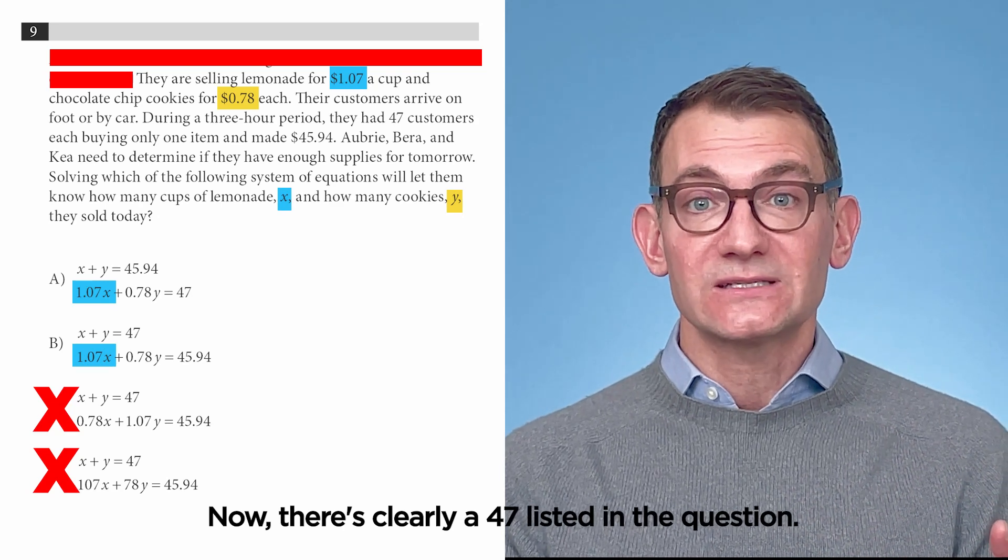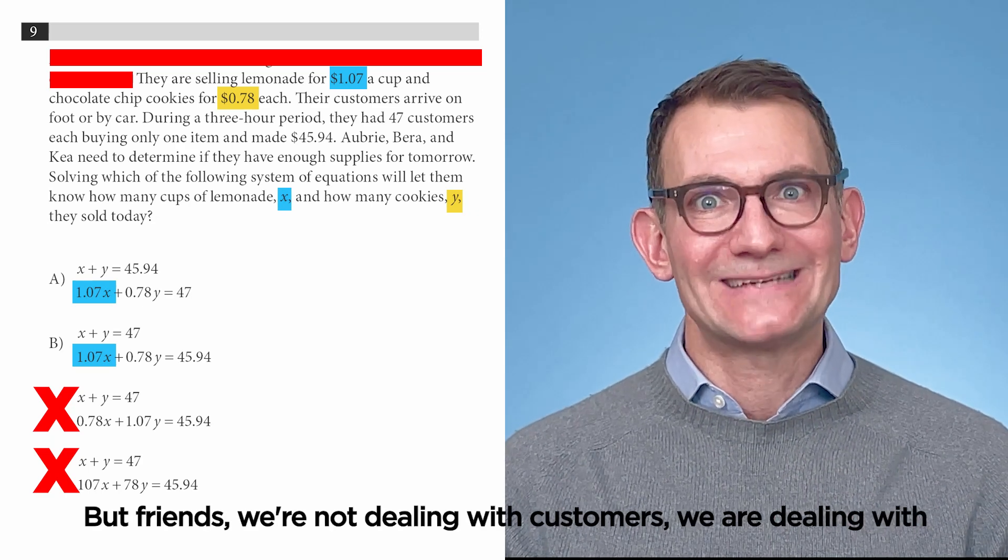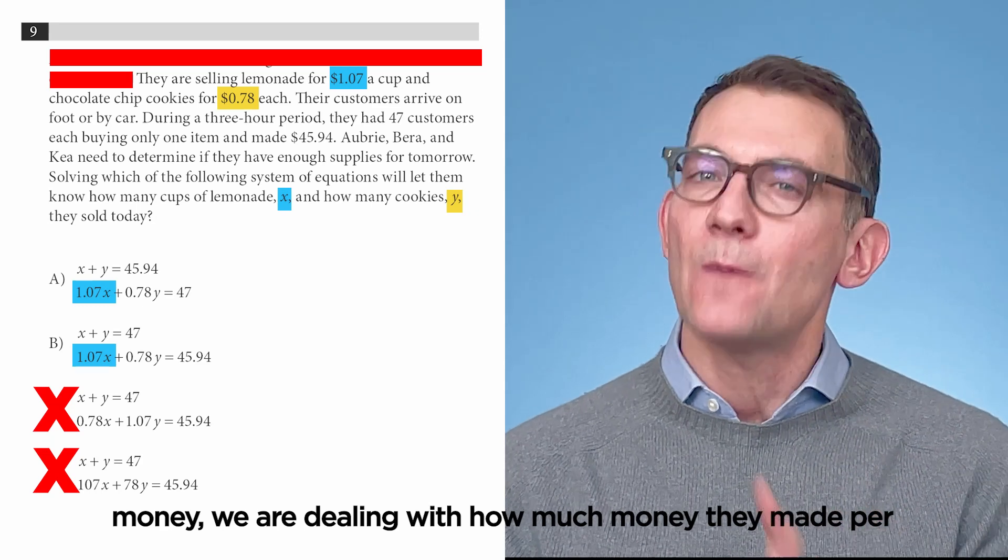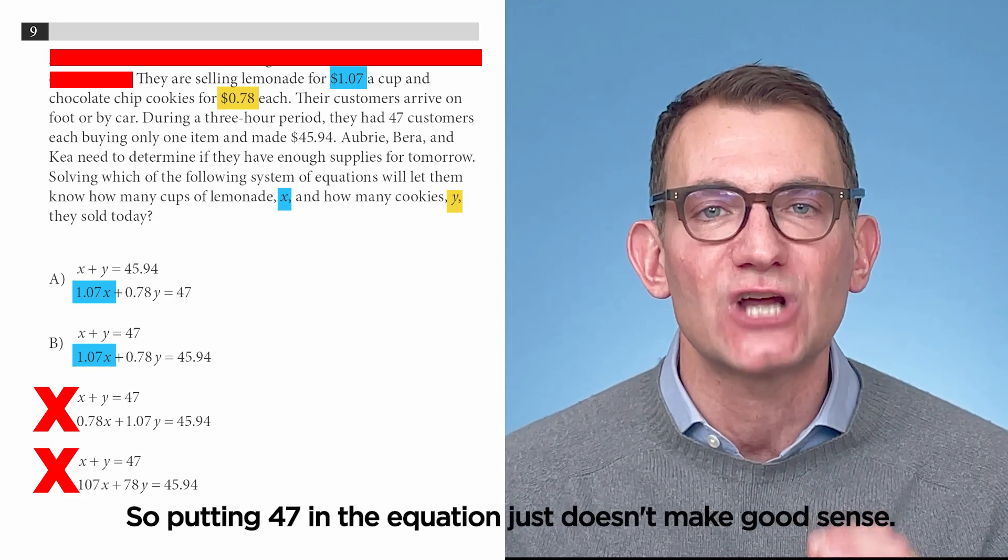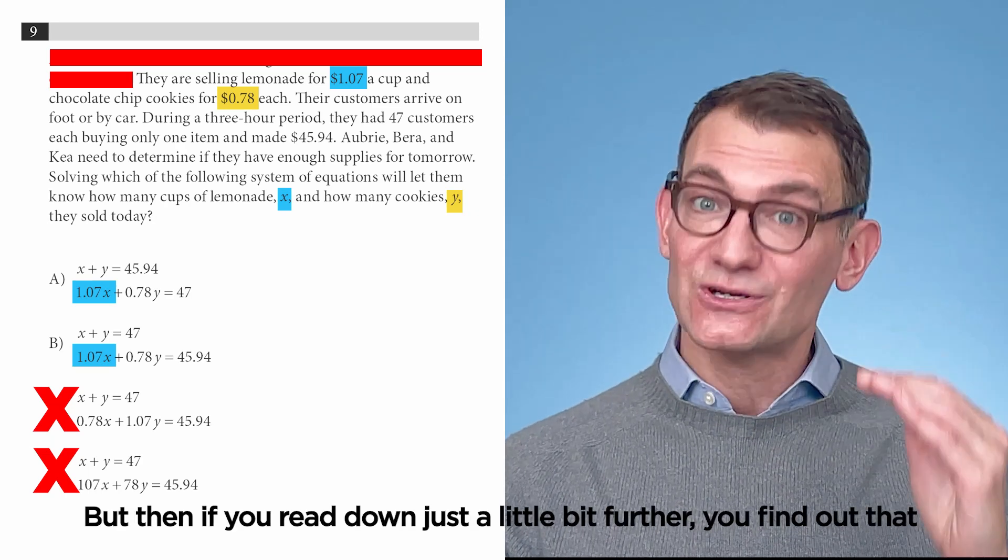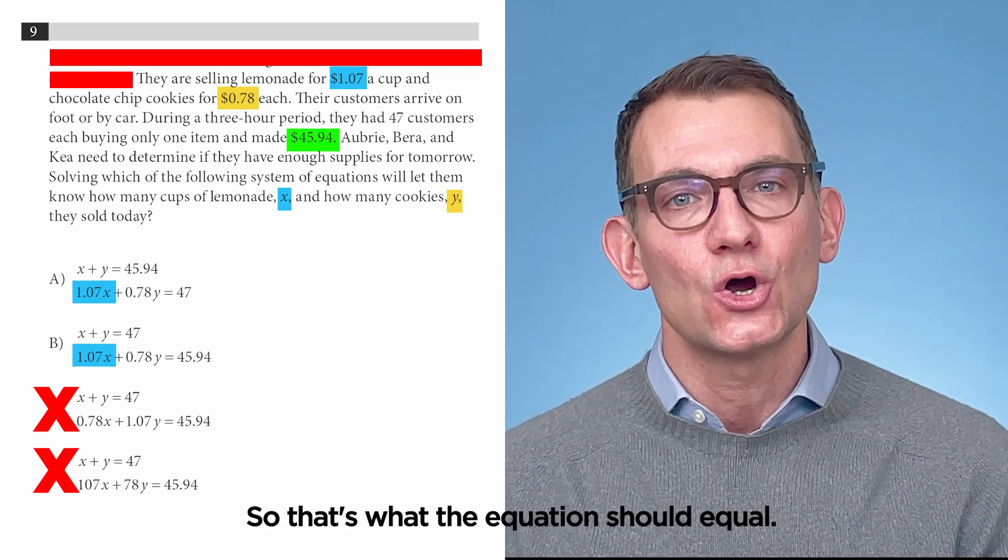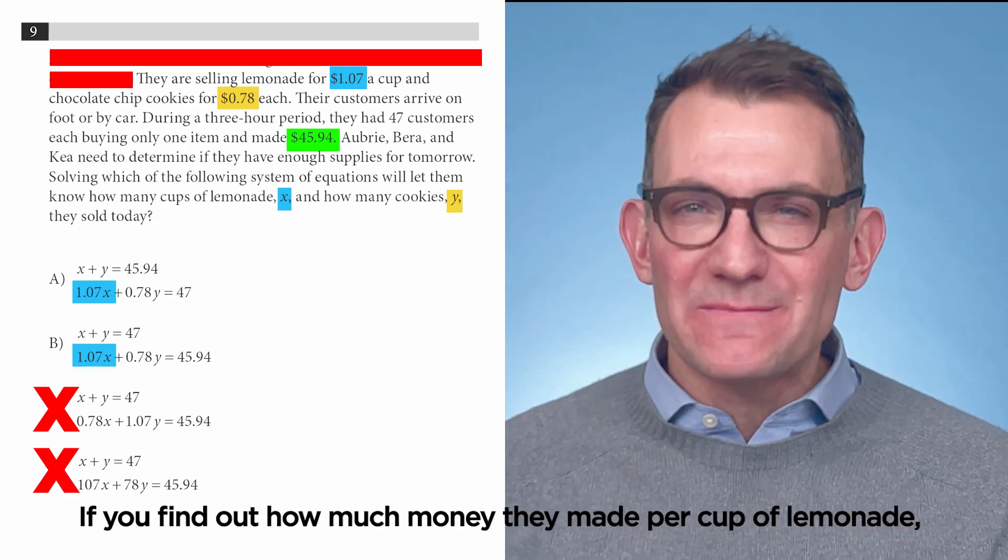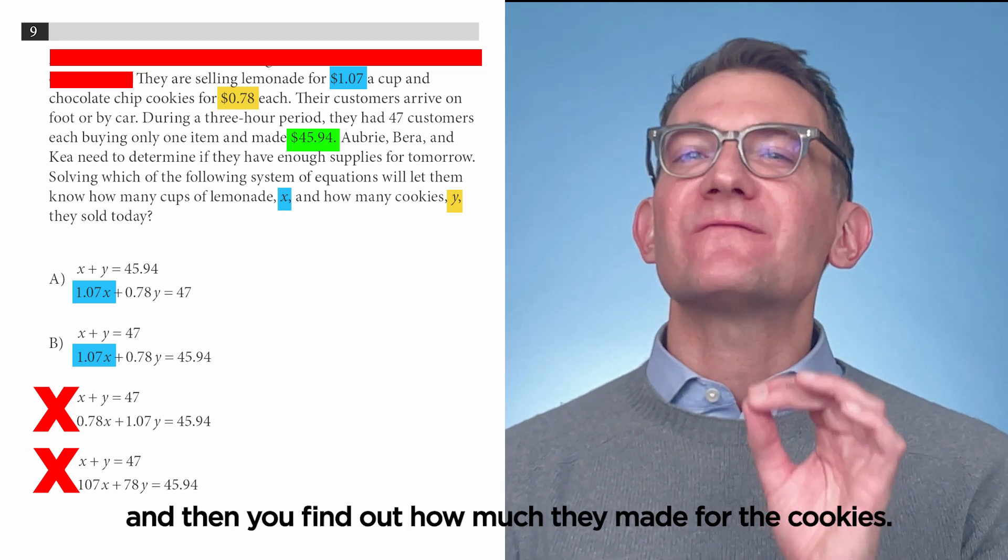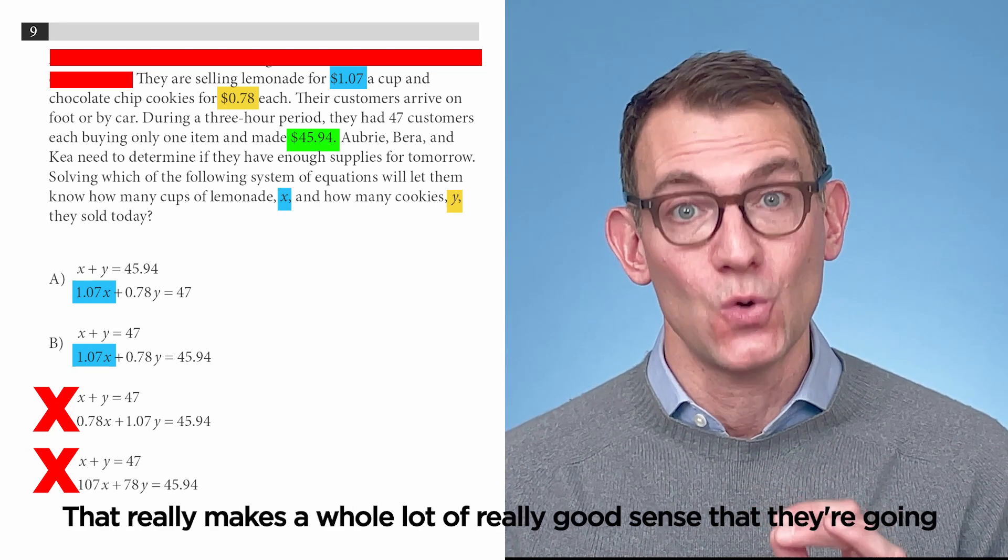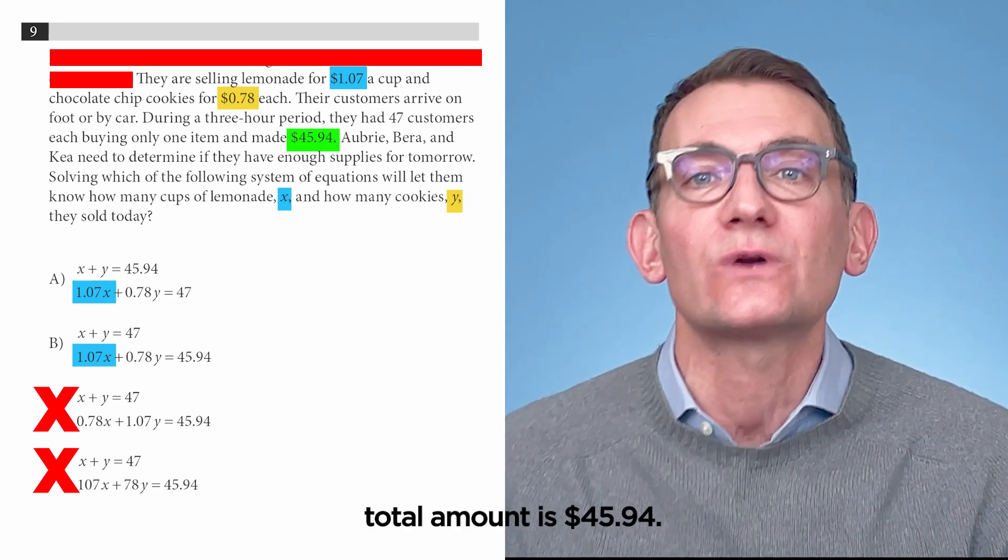Now, there's clearly a 47 listed in the question. It notes that during a three-hour period, they have 47 customers. But friends, we're not dealing with customers. We are dealing with money. We are dealing with how much money they made per lemonade and how much money they made per cookie. So, putting 47 in the equation just doesn't make good sense. But then, if you read down just a little bit further, you find out that they made $45.94. That is the money that they made. So, that's what the equation should equal. If you find out how much money they made per cup of lemonade, and you multiply that by the number of cups of lemonade they sold, and then you find out how much they made for the cookies, that really makes a whole lot of really good sense that they're going to equal that total amount that they made. And we know that that total amount is $45.94.